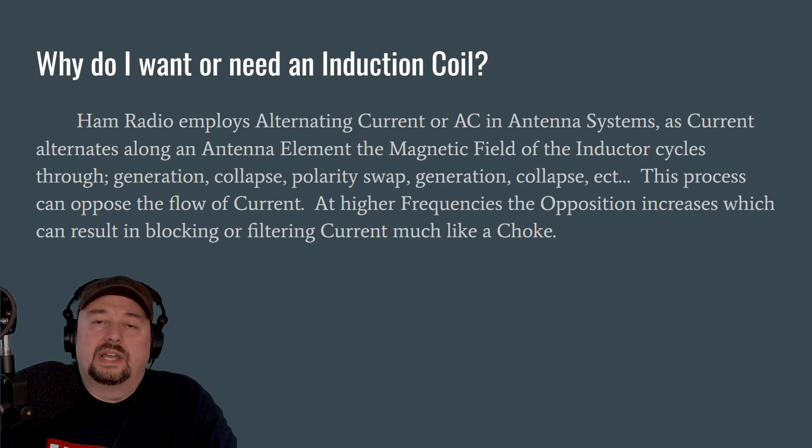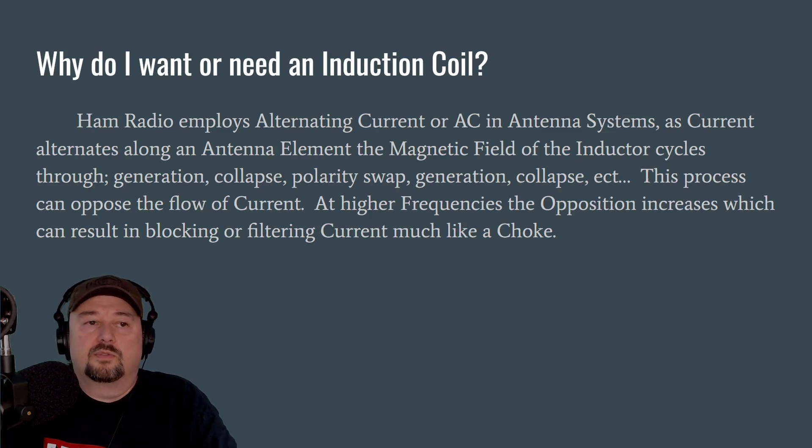So you may be asking why do you want or need an induction coil? Ham radio employs alternating current or AC in antenna systems, not DC current. As current alternates along the antenna element, the magnetic field of the inductor cycles through generation collapse, polarity swap, generation collapse, and it keeps going through that cycle.